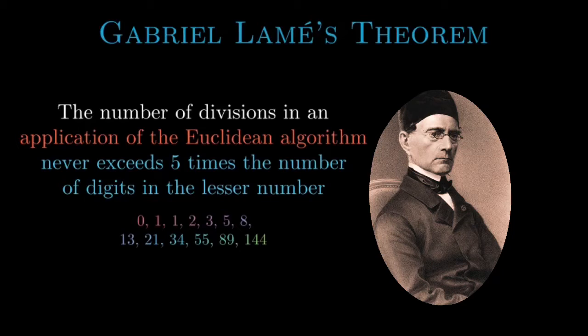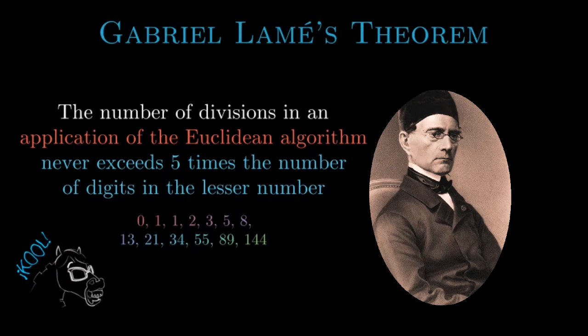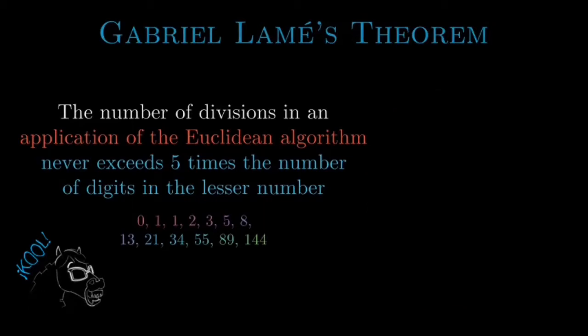However, his running time analysis of Euclidean algorithm is notable in the sense that it marks the beginning of computational complexity theory. It is remarkable that he proved this theorem in the 19th century way back in 1844. And now, in the present, in one of the most disastrous years of the 21st century, let us make an attempt at understanding the proof.